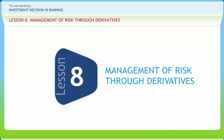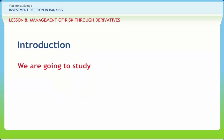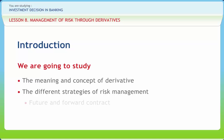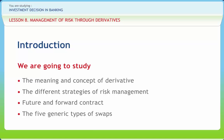Management of Risk Through Derivatives. We all know that derivative products minimize the impact of fluctuations in asset prices on the profitability and cash flow situation of risk-averse investors. In this lesson, we will discuss the meaning and concept of derivatives, explain the different strategies of risk management, explain futures and forward contracts, and state the five generic types of swaps.